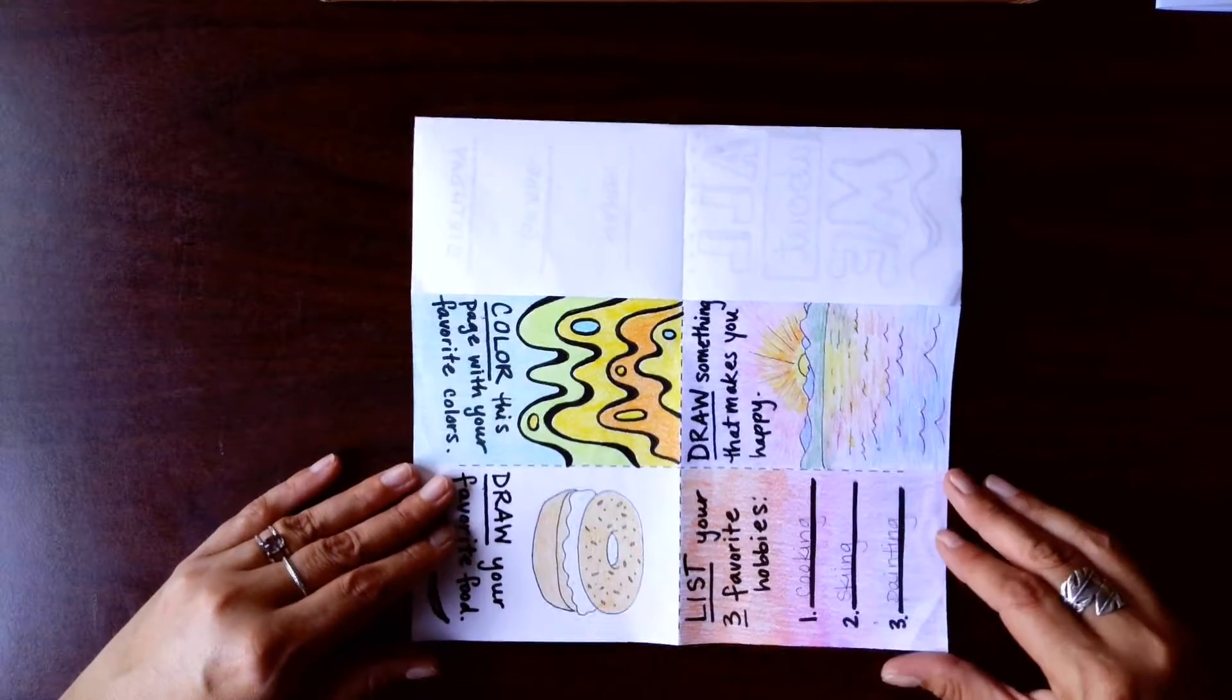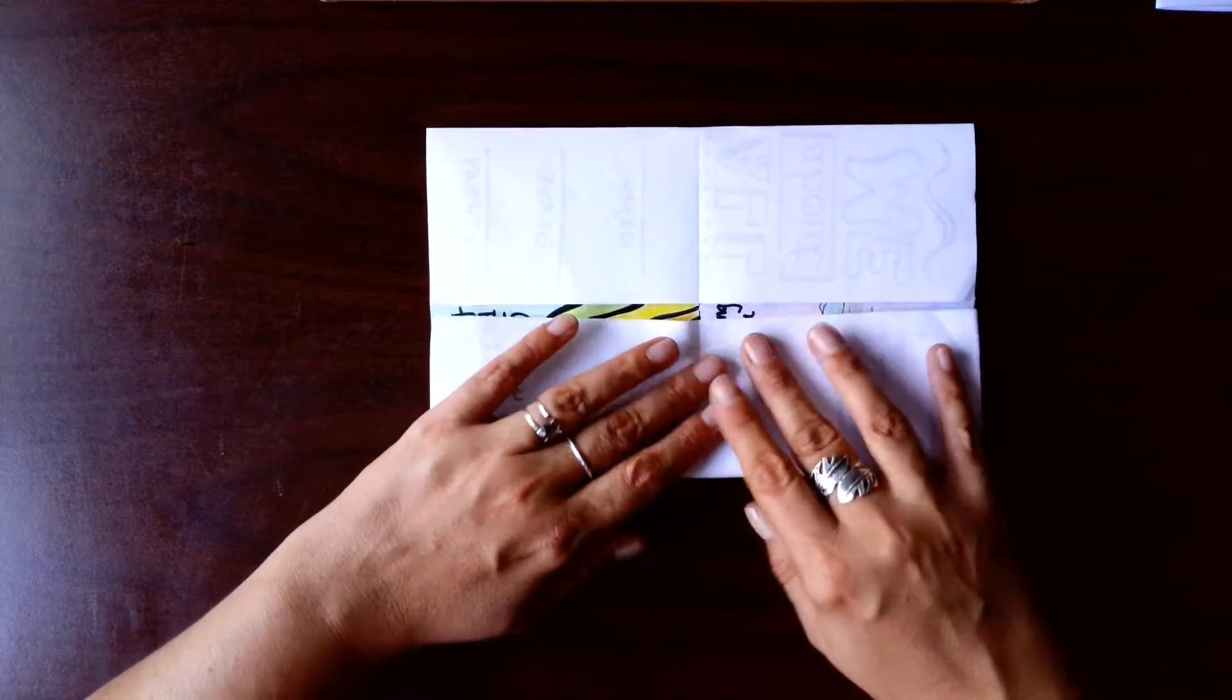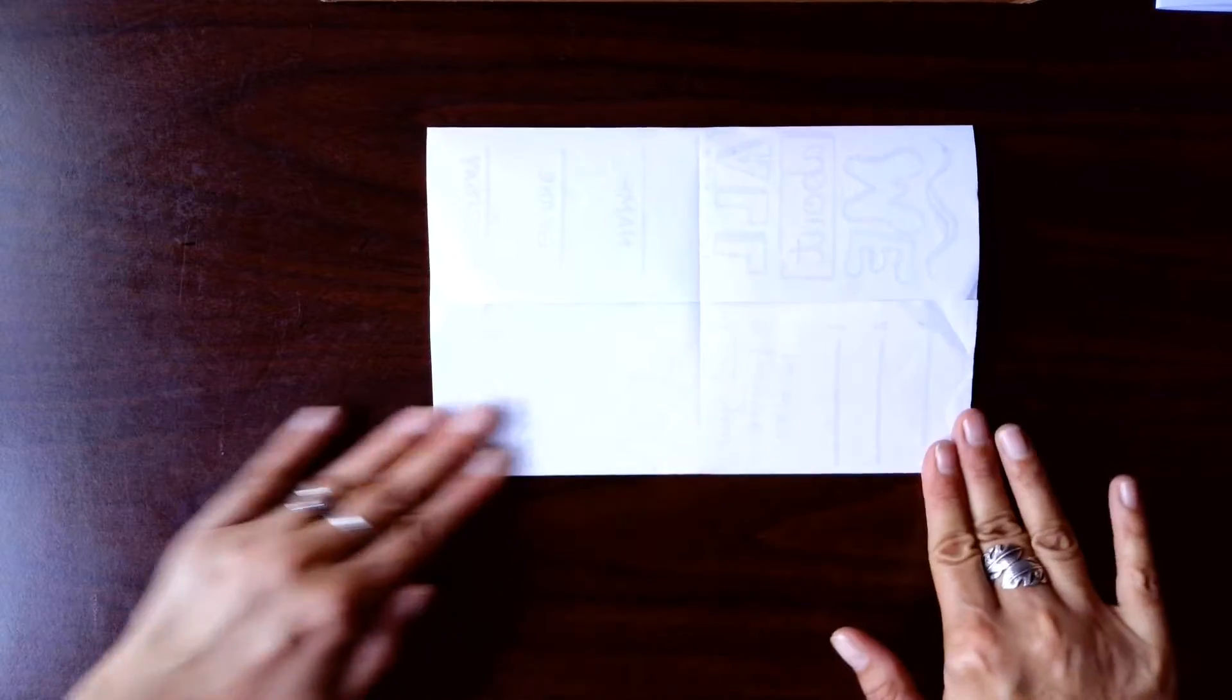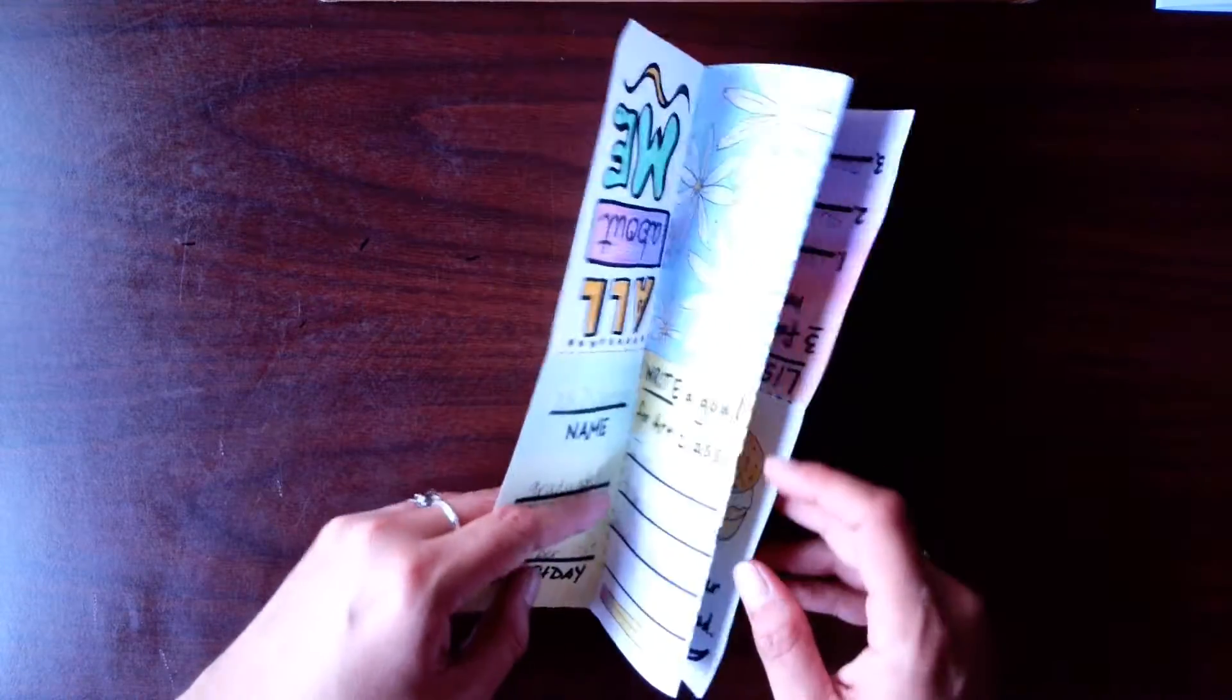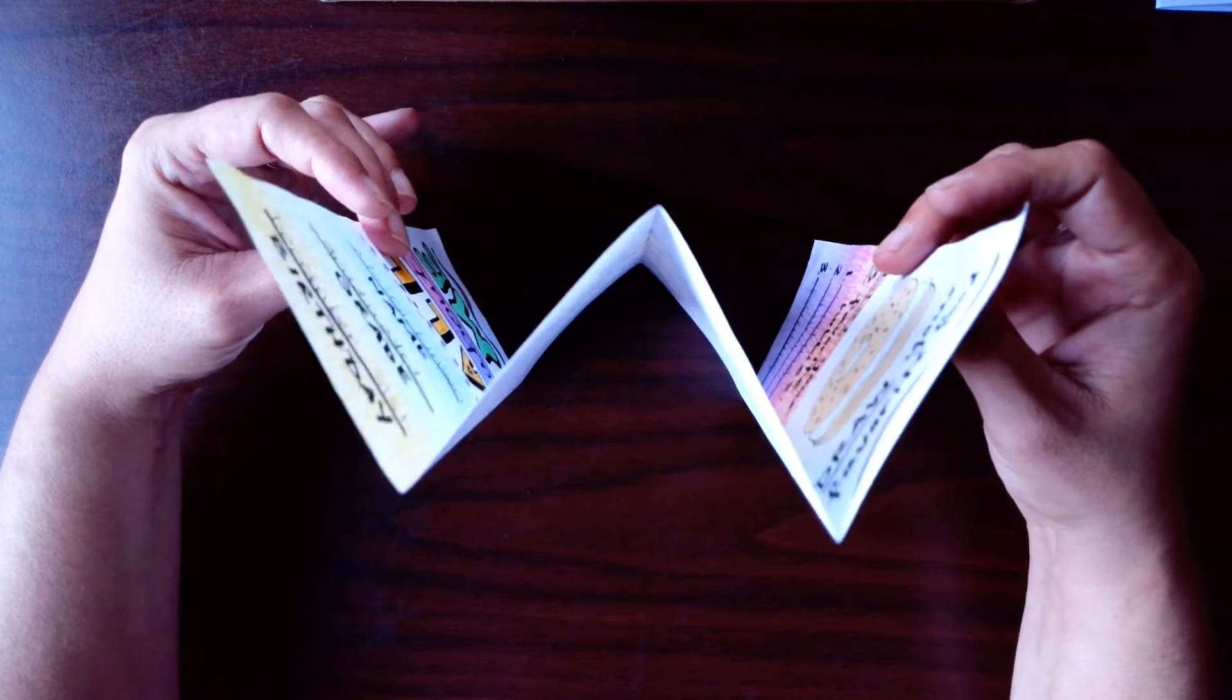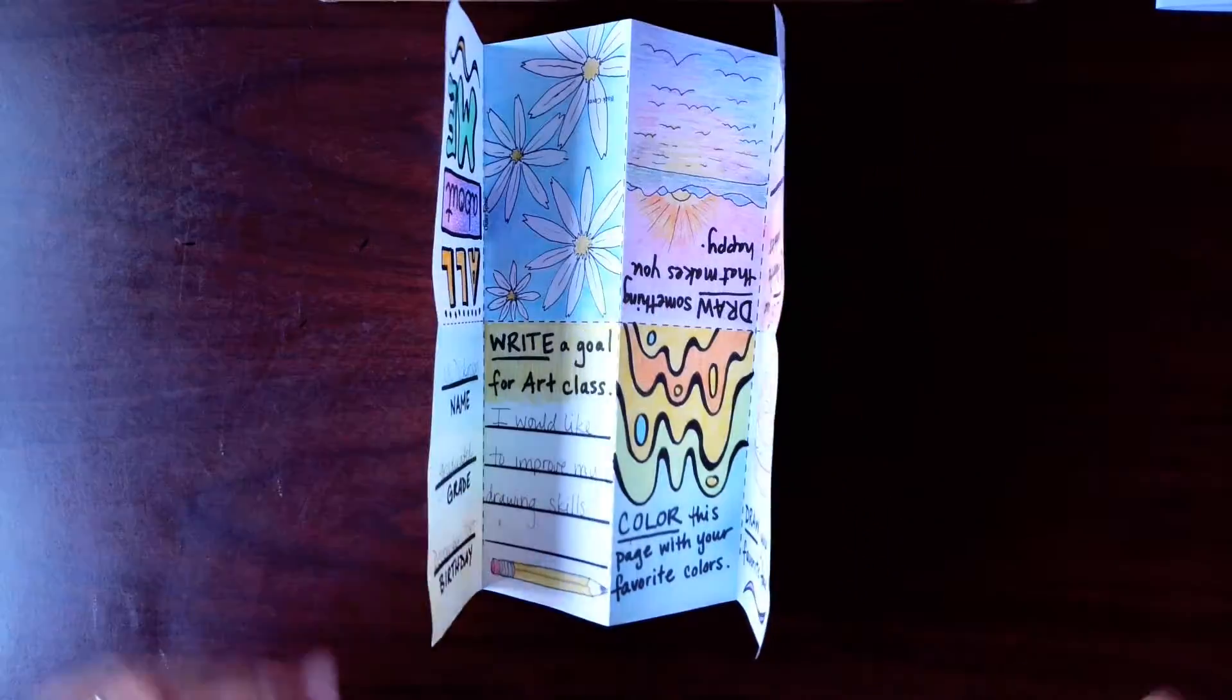I'm going to do the same thing on the other side, folding it up to meet that center fold. When you open it up, it should create kind of like a W on the side. That's how you know you folded it the right way.